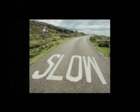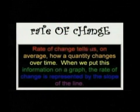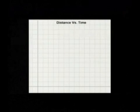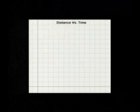We can calculate the time it takes to travel to Grandma's house. That will help us determine if I can do the trip in one day or if we need more than one day. This will impact my budget because I could possibly need to get a hotel room, buy more meals, and so on. Let's take another quick look at our definition of rate of change: rate of change tells us, on average, how a quantity changes over time. When we put this information on a graph, the rate of change is represented by the slope of the line.